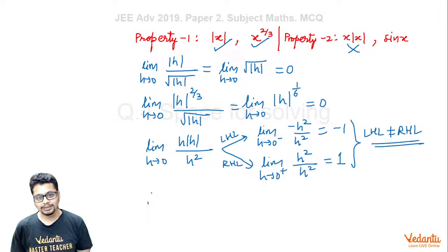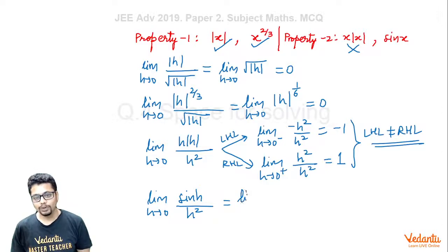Now for sin x: lim(h→0) [sin(h) - 0]/h² = lim(h→0) sin(h)/h². We know the standard limit: lim(h→0) sin(h)/h = 1, which is finite. But here we have an additional 1/h multiplied to it. So this expression sin(h)/h tends to 1.